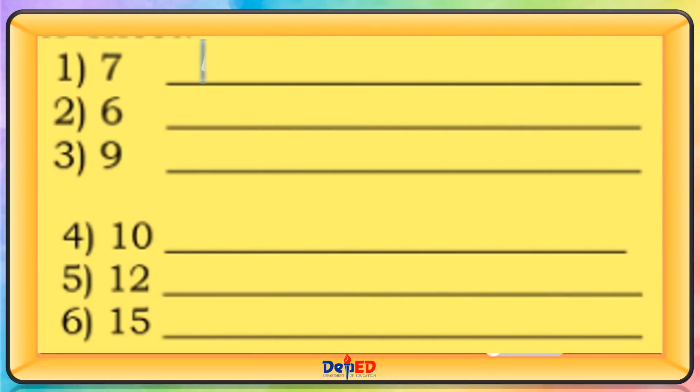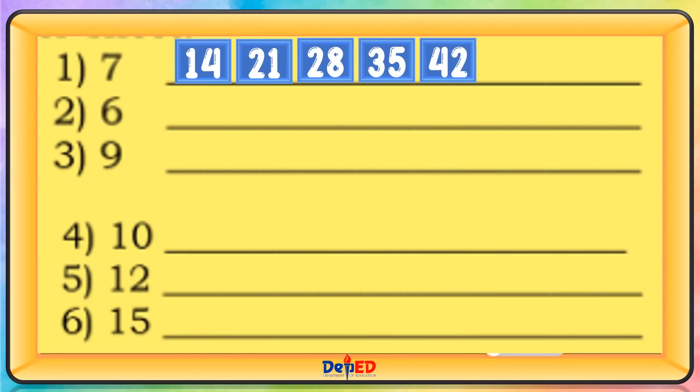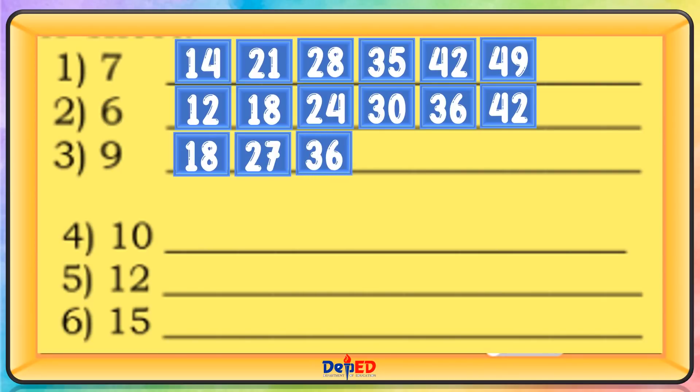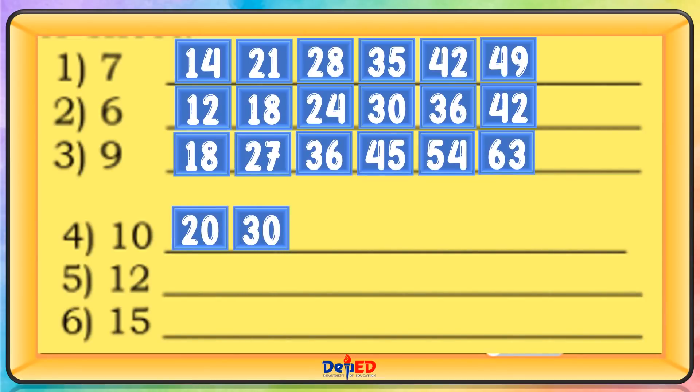Multiples of 7: 7, 14, 21, 28, 35, 42. Multiples of 6: 6, 12, 18, 24, 30, 36. Multiples of 9: 9, 18, 27, 36, 45, 54. Multiples of 10: 10, 20, 30, 40, 50, 60.